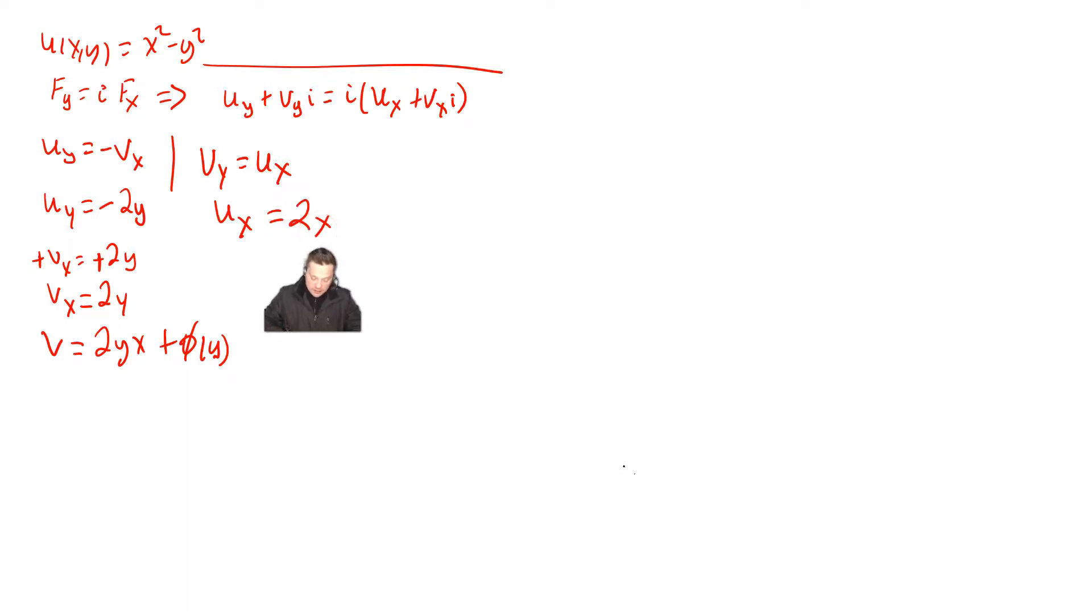But keep something in mind here. This is the key step now. This equation says that u sub x, I already know that, is equal to v sub y, which I don't know. But what I can do is come over here, look at that form of it, and I can differentiate that with respect to y. So it's going to look like v sub y is equal to 2x plus phi prime of y. Now be very careful. Like the 2yx, when you differentiate with respect to y, the y goes away and only the 2x part stays. And that other piece, that phi of y, that also stays, but it turns into phi prime of y.